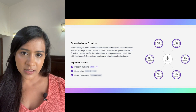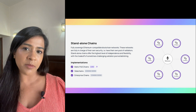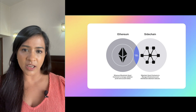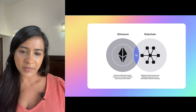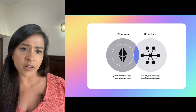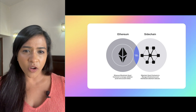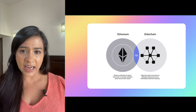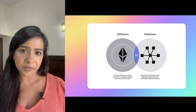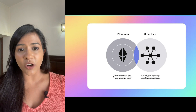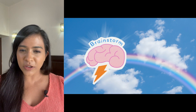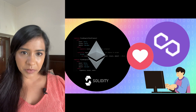Polygon plans to launch optimistic and ZK rollups soon, but for now only Matic plasma and a proof-of-stake side chain are live on the mainnet. Side chains are basically blockchains that run in parallel with the main chain and have their own consensus mechanism. The problem with side chains is that it is incredibly difficult to achieve decentralization — more often than not, the founding company ends up owning the majority of the platform, so validators could potentially collude to commit fraud.